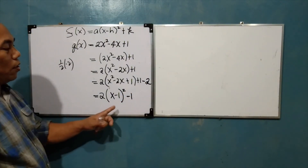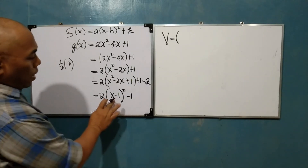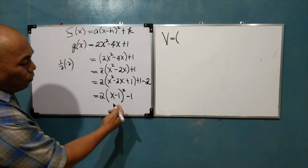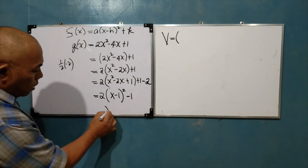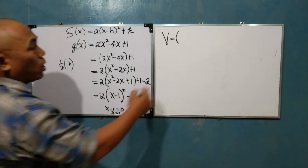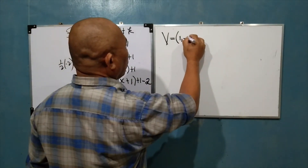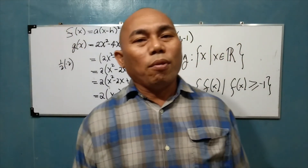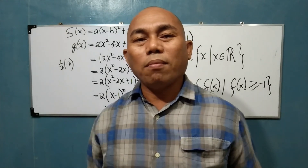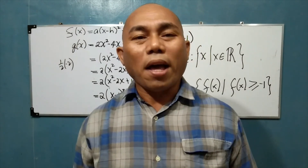Now it is easy to determine the coordinates of the vertex. Set x - 1 equal to 0, so x equals 1. This is the x-coordinate of the vertex, and k = -1 is the y-coordinate of the vertex. If you like our video, please subscribe, and if you have some topics you'd like us to discuss in our channel, please write it in the comment section. Stay safe.